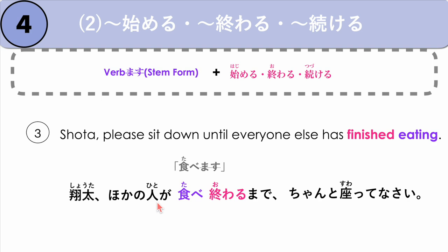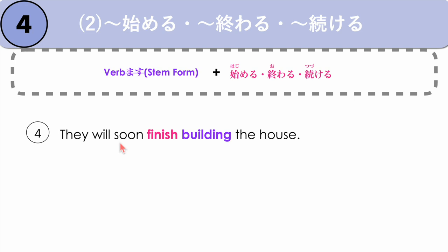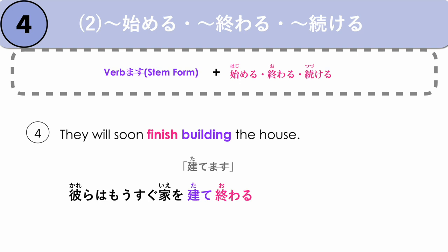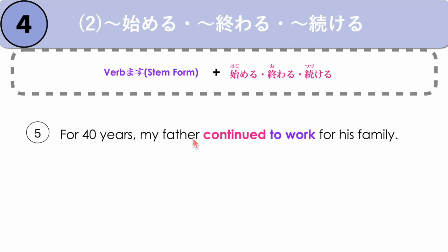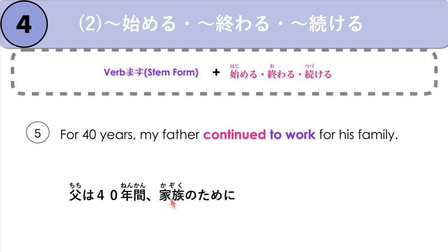Next example: they will soon finish building the house. Karera wa, mou sugu ie wo tate owaru desho. They will soon finish building the house. Next example: for 40 years, my father continued to work for his family. Chichi wa yonjuunen kan, kazoku no tame ni — our verb is to work: hatarakimasu. We get the stem hata raki, plus continue: tsuzukeru — tsuzukemashita. Continued to work; it's in the past. Chichi wa yonjuunen kan, kazoku no tame ni hata raki tsuzukemashita.